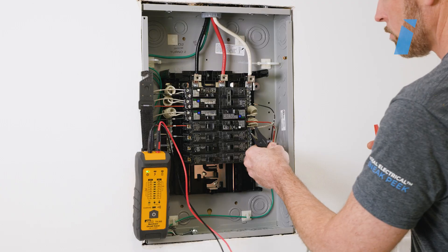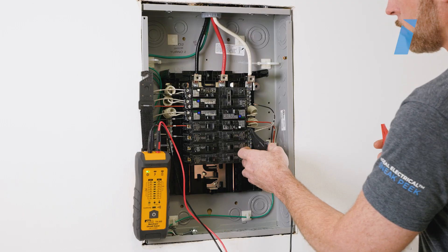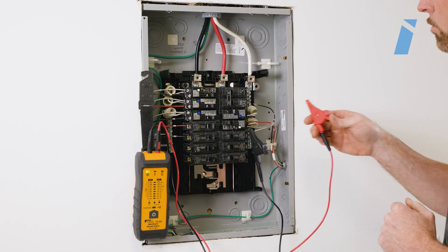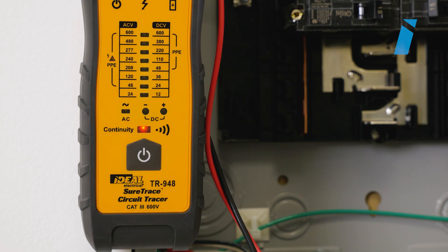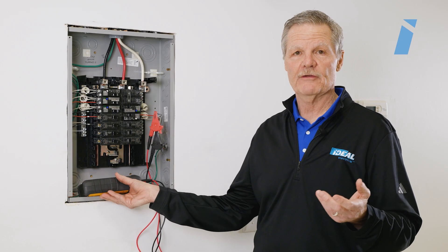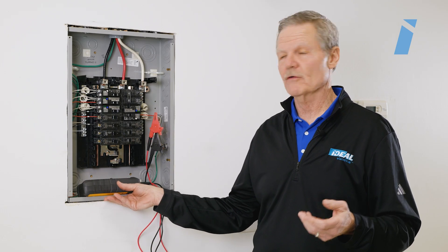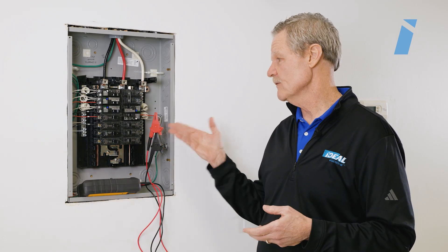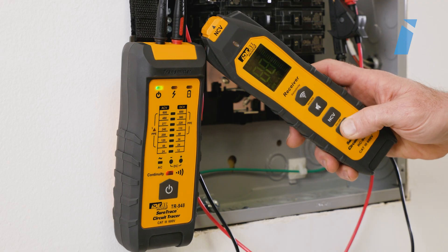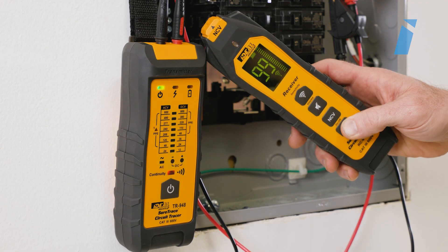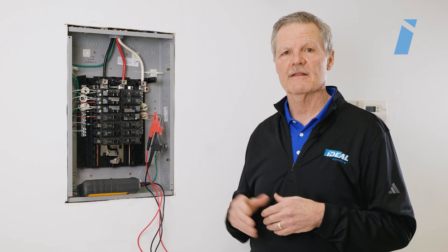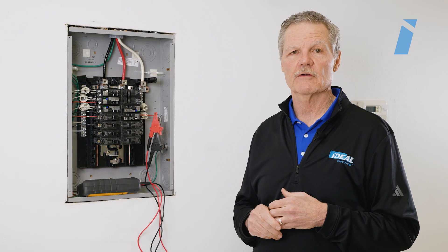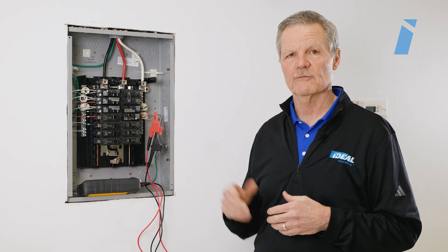When you put those alligator clips on and you've got the transmitter on, it's going to indicate that you have a condition of continuity — and that means you're set and ready to go for tracing. Once you've got those clips on, you're transmitting the signal over that shorted set of lines and you're ready to identify that particular short in the system.